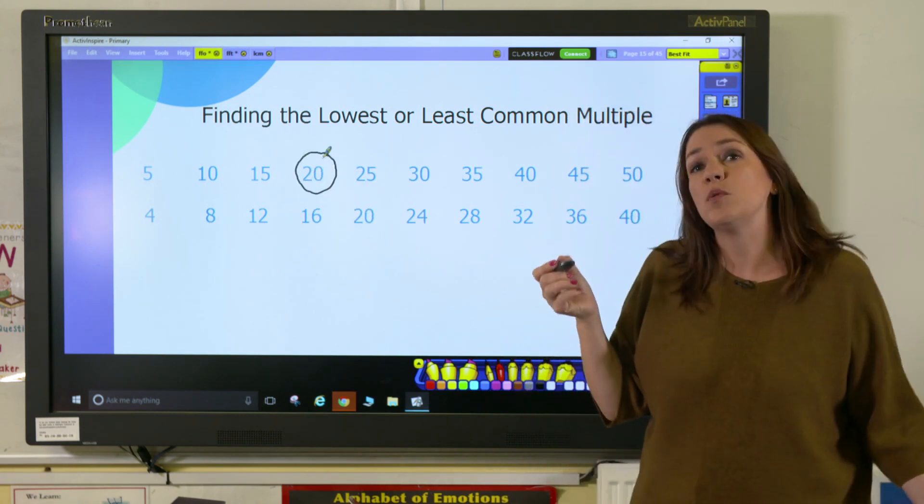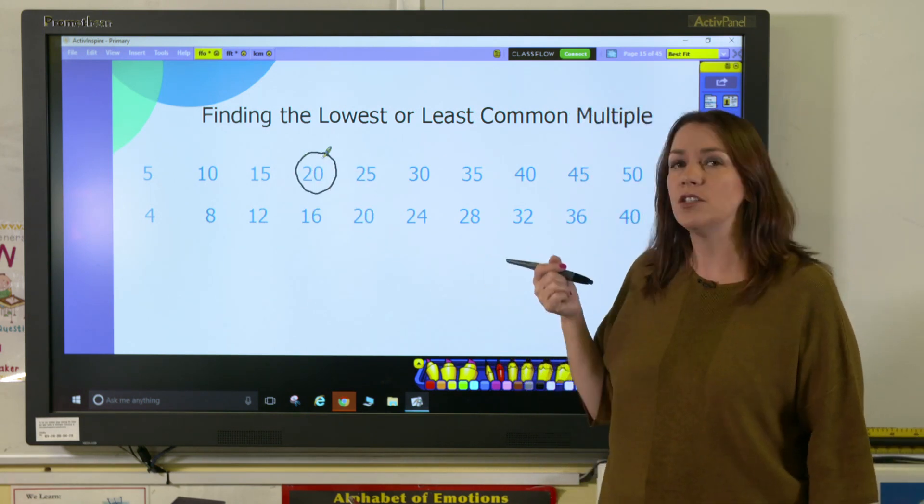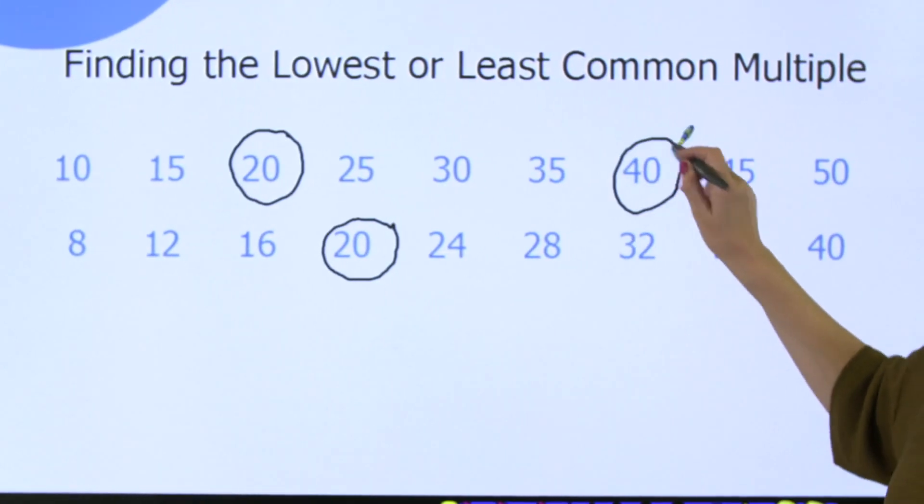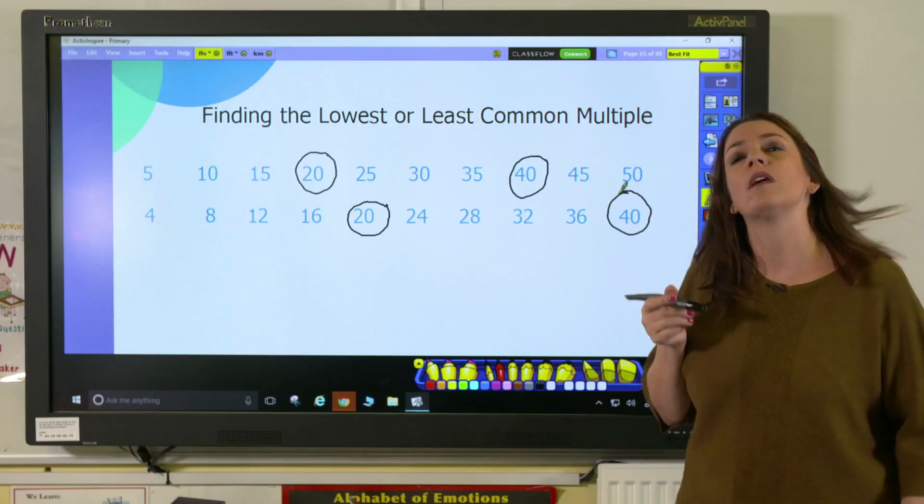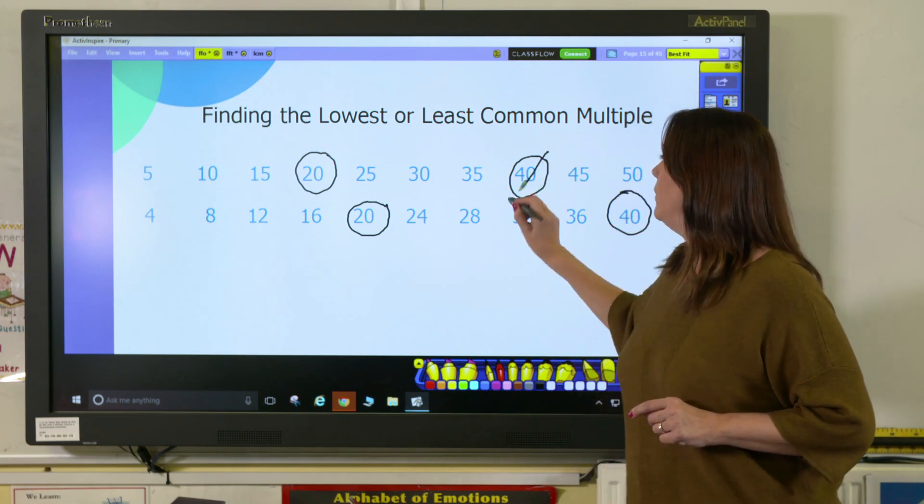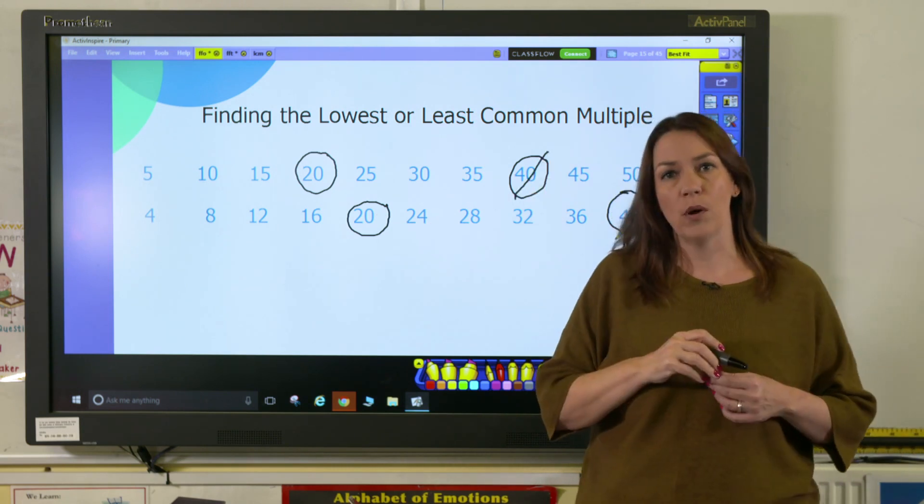And then with the multiples of 4, we have 4, 8, 12, 16, and 20. They also have 40 as a common multiple. But we're looking for the lowest common multiple. So they both have 20 in common, and that is their lowest common multiple.